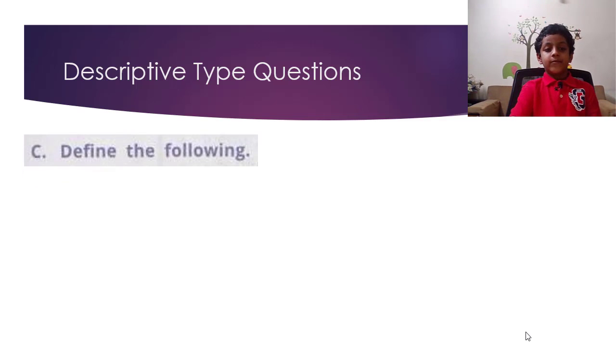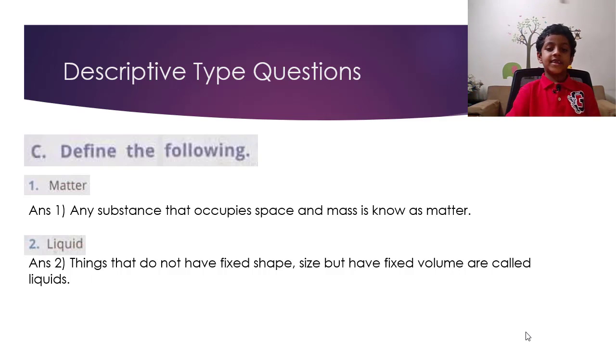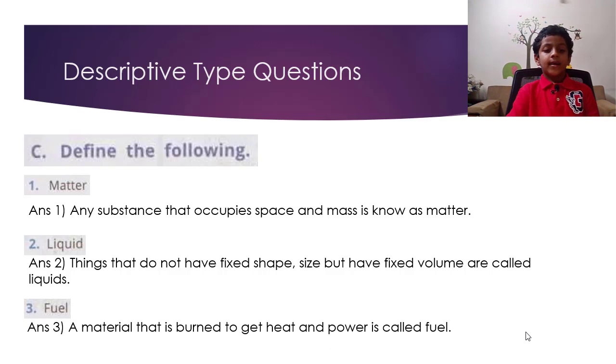Descriptive type questions. Define the following: Matter - Any substance that occupies space and has mass is known as matter. Liquid - Things that do not have fixed shape or size but have fixed volume are called liquids. Fuel - The material that is burned to get heat and power is called fuel.